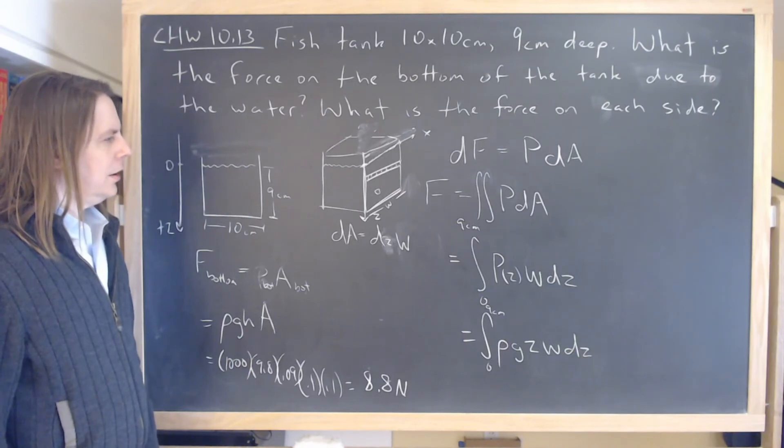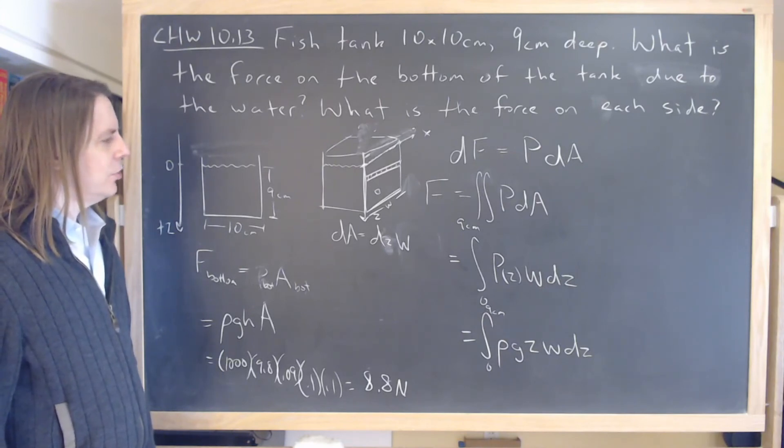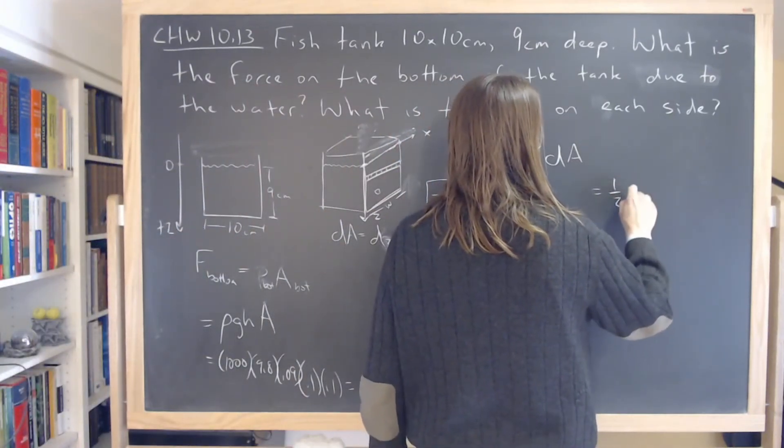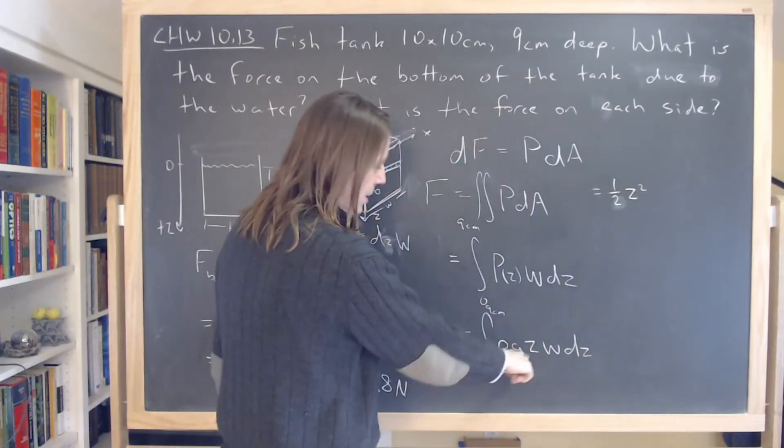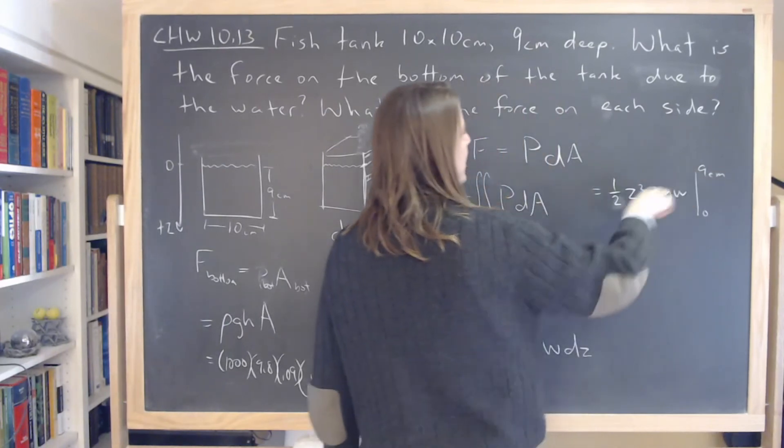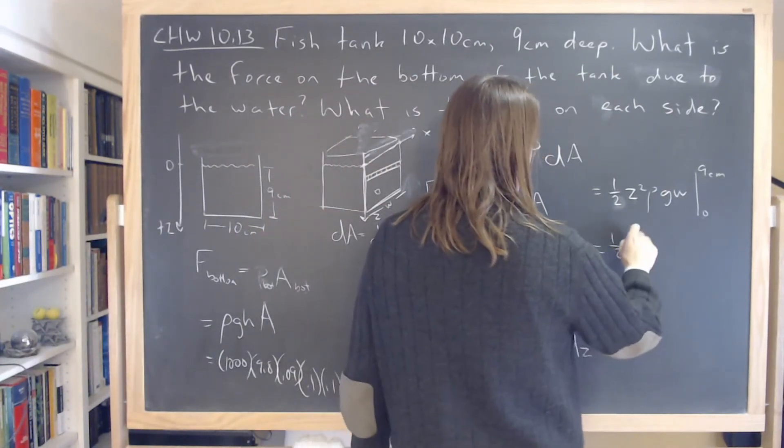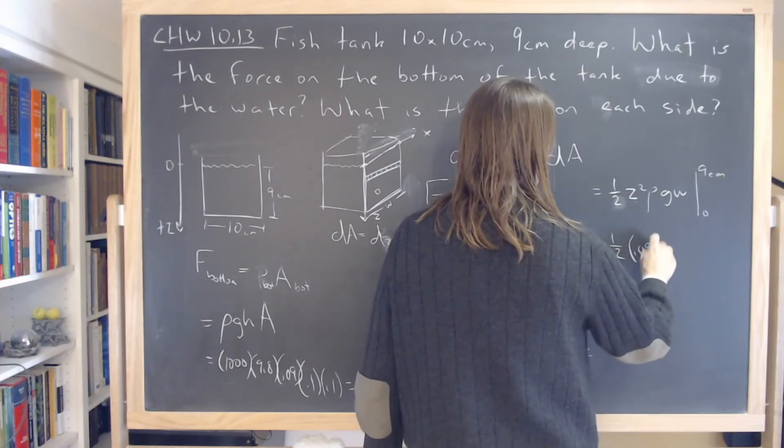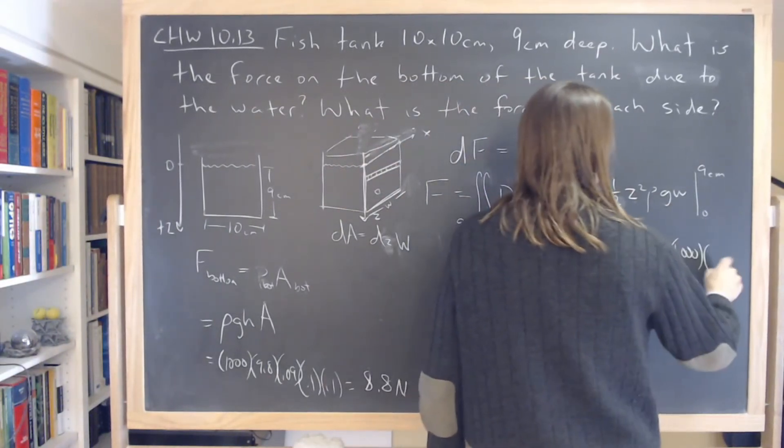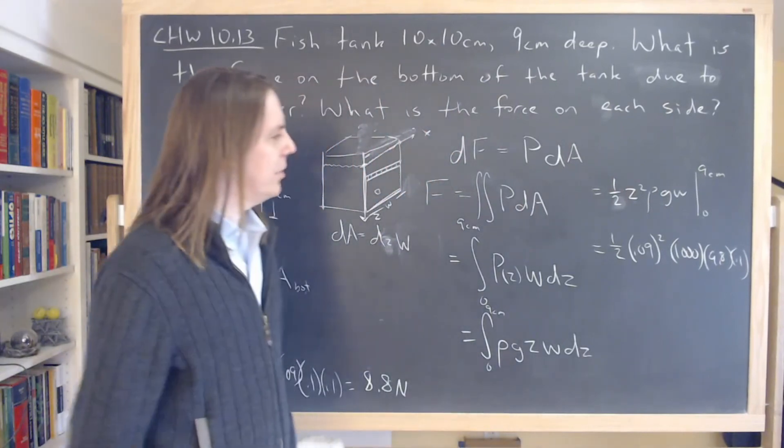Okay. Let's see. Is that all correct? I think that's right. Yeah. Okay. So in this case, now we just do the integral. So we're integrating z dz. So it's equal to one half, that is a 2, z squared. And then rho g w, rho g w evaluated from 0 to 9 centimeters. So we're going to evaluate it at 9 minus evaluate it at 0, but that makes 0. So now we just plug in some numbers here. One half 0.09 squared. We're doing this at MKS. Times 1,000 is the density. Times 9.8 times the width is 0.1. So there's all your numbers.